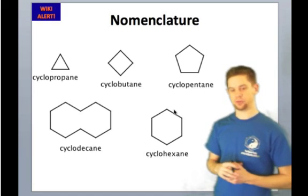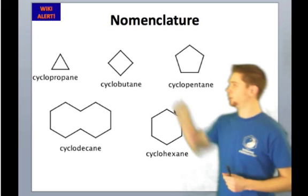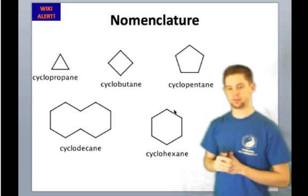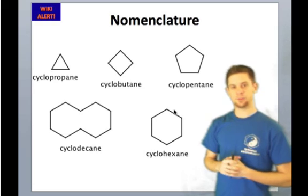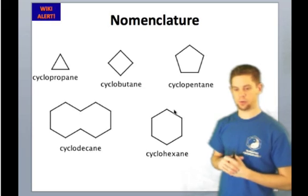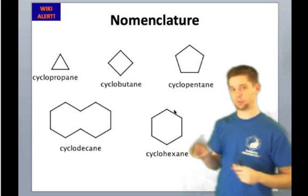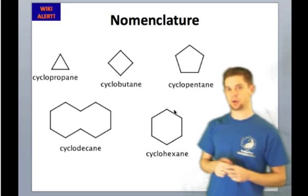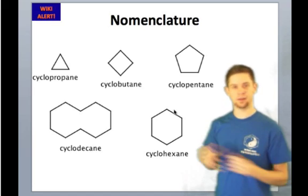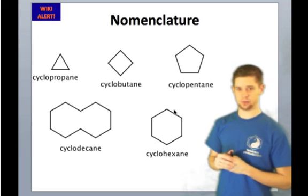The way we name the open-chain forms is with certain prefixes. I put a wiki alert at the top of this slide because the wiki goes into this in more detail, but I've given you here a few examples of how we name cyclic hydrocarbons. We use the prefix 'pro,' for instance, to designate three carbons. The open-chain three-carbon alkane is called propane. The suffix '-ane' refers to the fact that the molecule is fully saturated and contains only hydrogen and carbon.